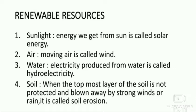Number four: soil. When the topmost layer of the land and the topsoil is not protected and is blown away by strong winds or rain, it is called soil erosion. In order to prevent soil erosion, we must plant trees and we must not cut them down.